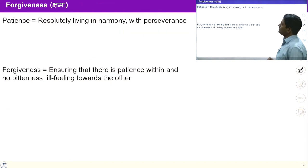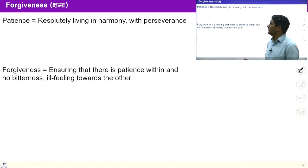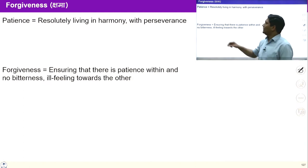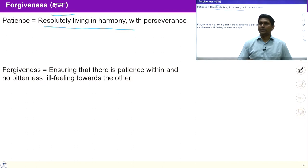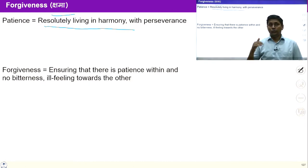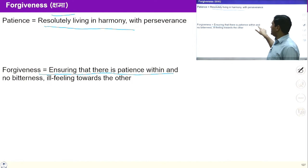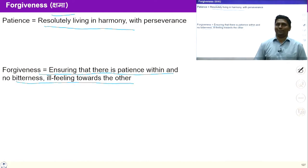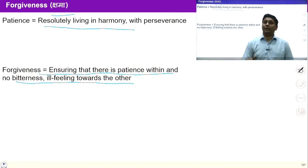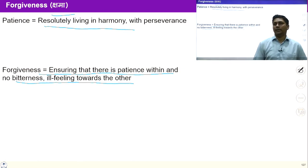Now we are going to talk about forgiveness, fortitude, compassion, sincerity, and balanced diet. Forgiveness has two parts: the first is to live resolutely in harmony with preservation, which is known as patience. The second part is to live with no bitterness, no ill feeling — this is forgiveness. Forgiveness means ensuring patience within and no bitterness or ill feeling towards the other. It means I am unaffected from the behavior of the other. If I am living unaffectedly from the behavior of the environment and others, it ensures forgiveness.